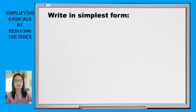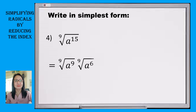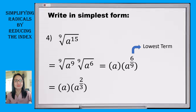Now let us simplify number 4. Our given is the 9th root of a raised to 15. Observe that the exponent 15 is higher than the index 9, meaning we have to simplify this first. So separating the 9th root of a raised to 15 into the 9th root of a raised to 9 times the 9th root of a raised to 6. Getting the 9th root of a raised to 9 gives us a. Therefore, we will get a times a raised to 6 over 9. Then reducing 6 over 9 to lowest form, which is 2 thirds, by dividing 6 and 9 by 3. So the radical form is a times the cube root of a squared.